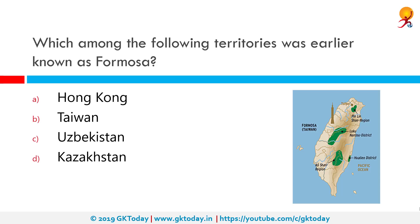Which among the following territories was earlier known as Formosa? Correct answer is Taiwan.